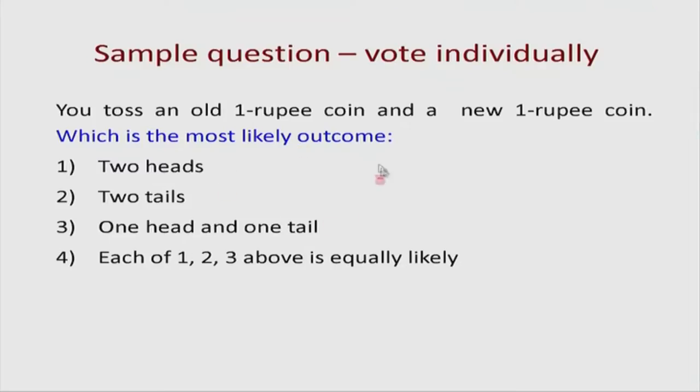Number four was the option stating that each of outcomes one, two, and three above is equally likely. Here is the question: you did one round of voting where 85 percent of participants got it wrong, and many said that number four is the right answer. However, number four turns out to be the wrong answer — so try to find out why.